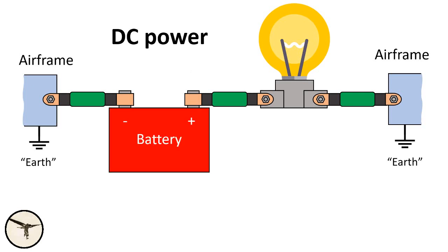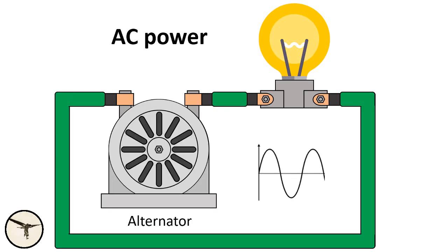AC is alternating current and is an electric current which reverses direction. The rate the direction changes is called frequency. In ATR aircraft, the frequency is 400 hertz or 400 times per second.